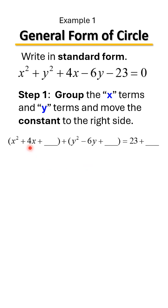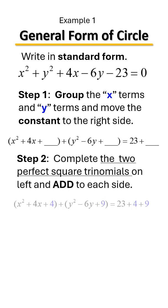Half of four is two, two squared is four. Half of six is three, three squared is nine. So we're adding a total of 13 to the left side.